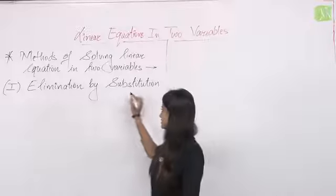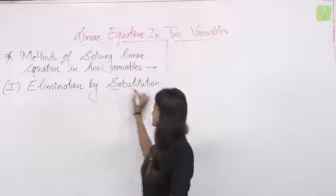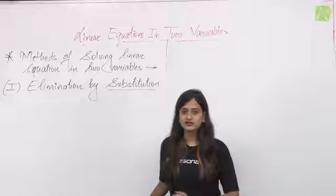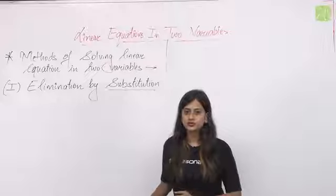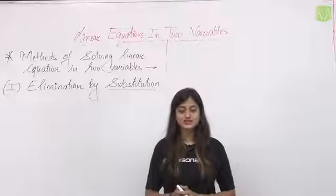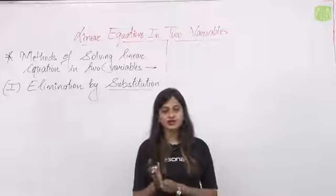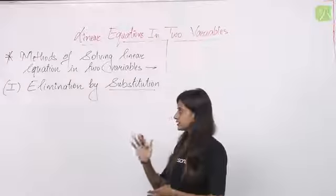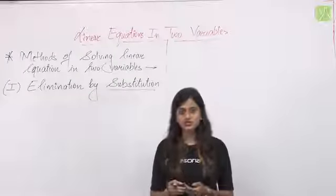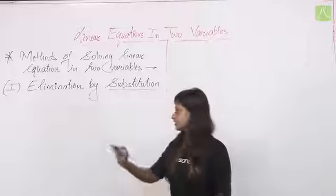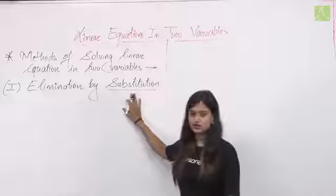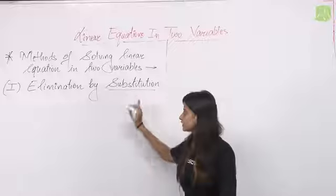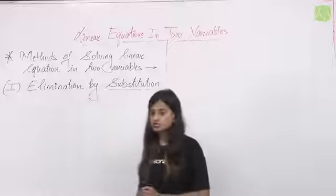We need to know how to solve by elimination by substitution. In the last class, if there is one variable, then there is one equation. But if there are two variables, then there are two equations. So whether it is substitution method, cross-multiplication method, or equating the coefficient method, there will always be two equations.